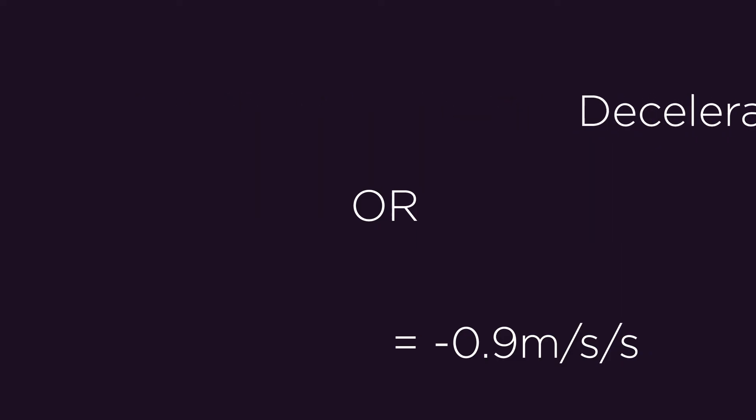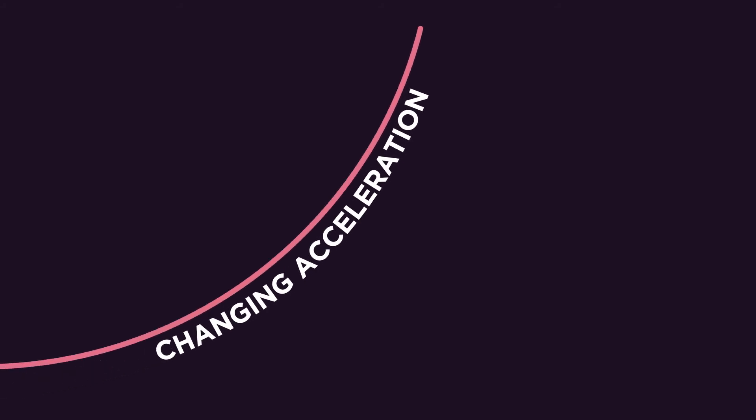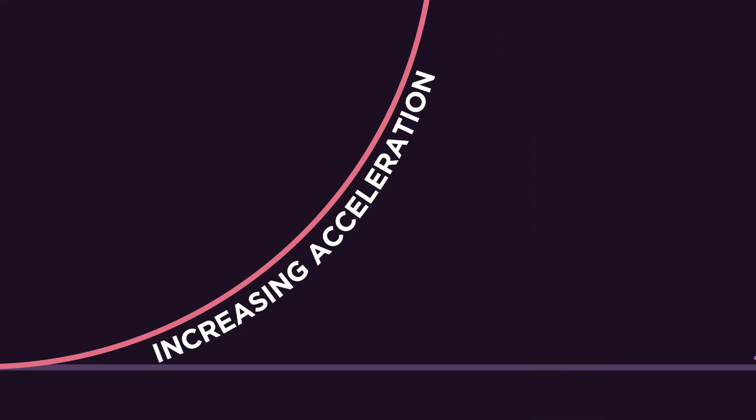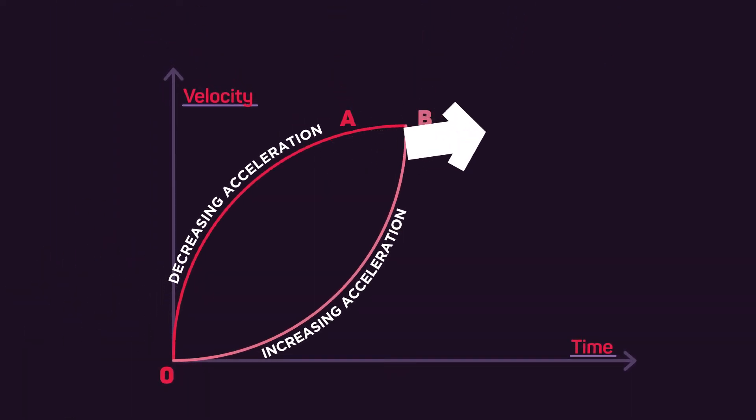If we have a curved gradient, this shows that the acceleration is changing, not constant. As you can see, an increasing acceleration is a curved line which has an ever-increasing gradient. A decreasing acceleration has a gradient that gets less over time.